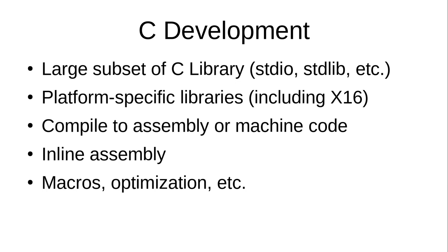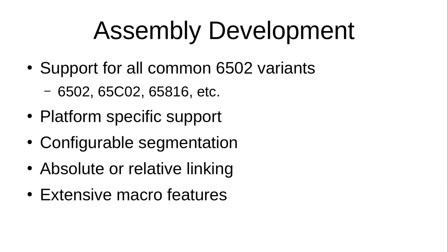You can also drop a little assembly right into your C code if something is kind of hard to express in C in any efficient way. And you can use macros and optimization to either make your program run faster or be smaller — whatever the need is — to make it fit into the time and space you need.